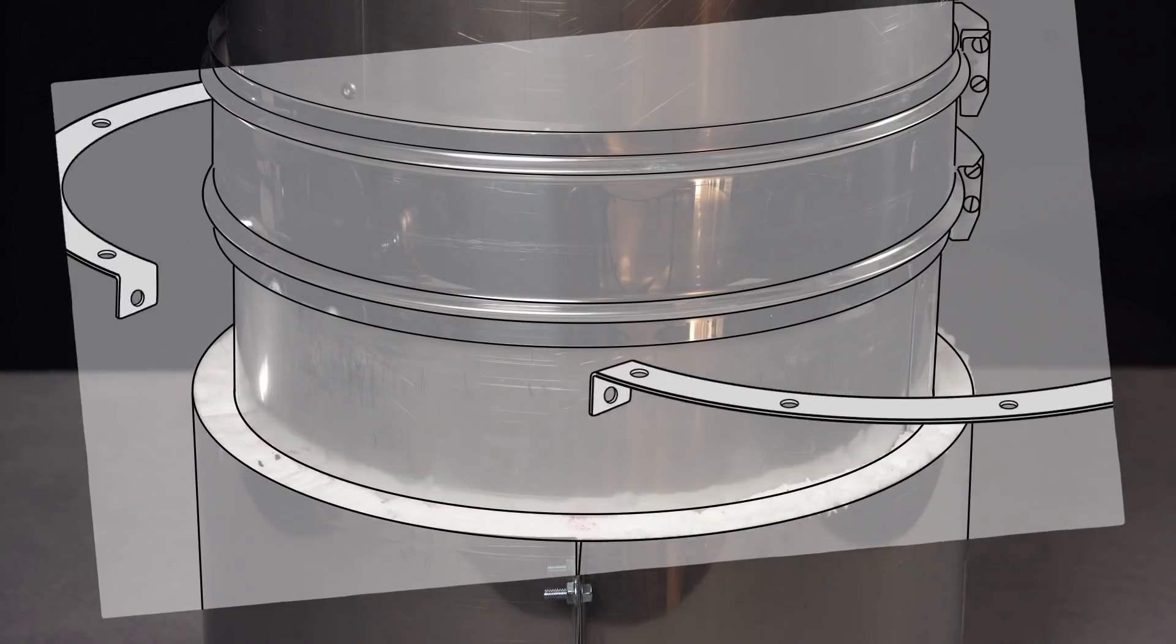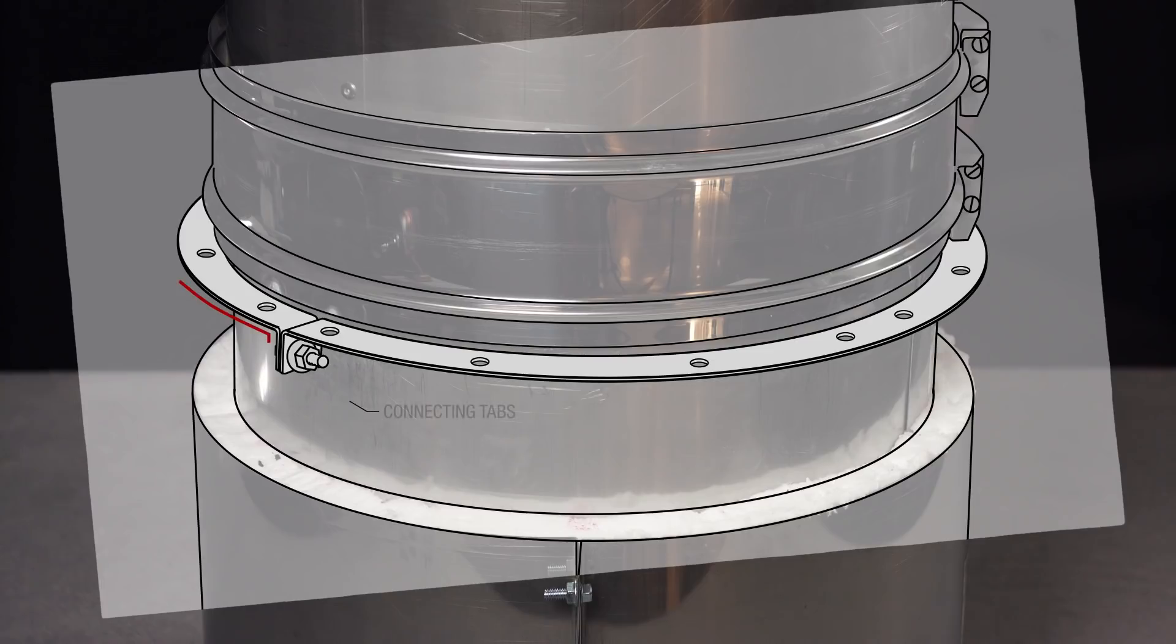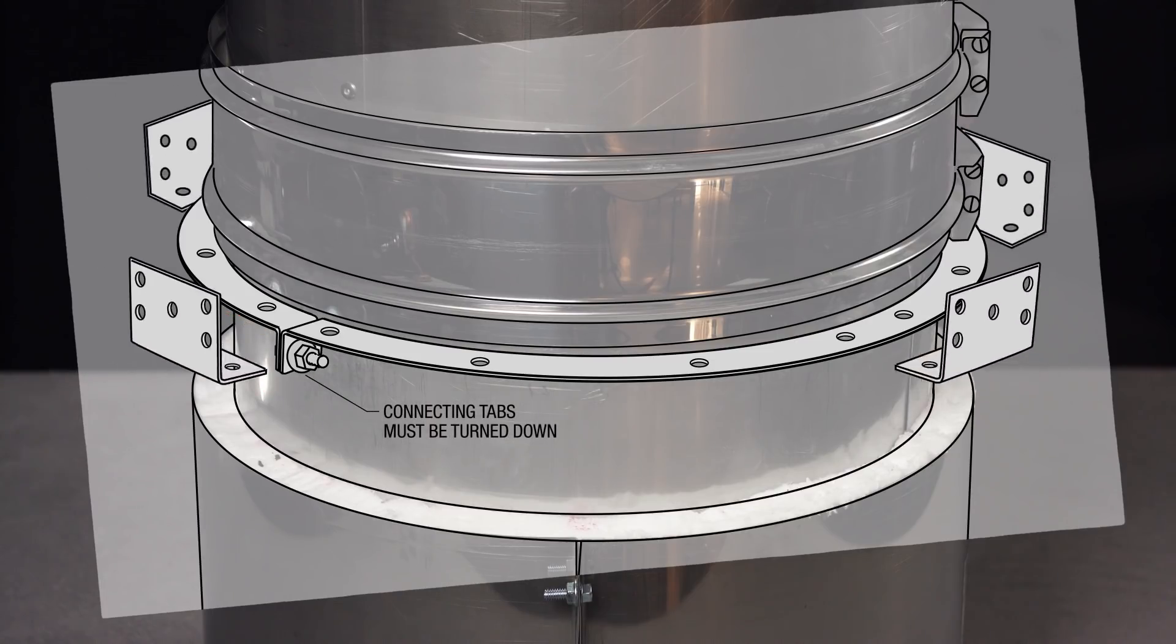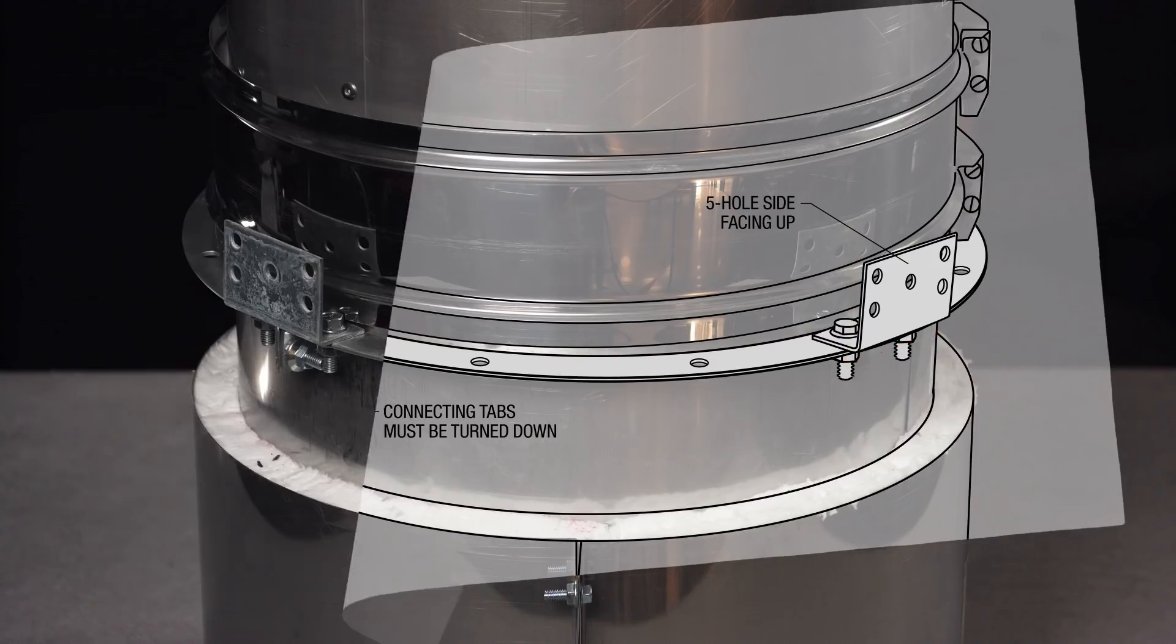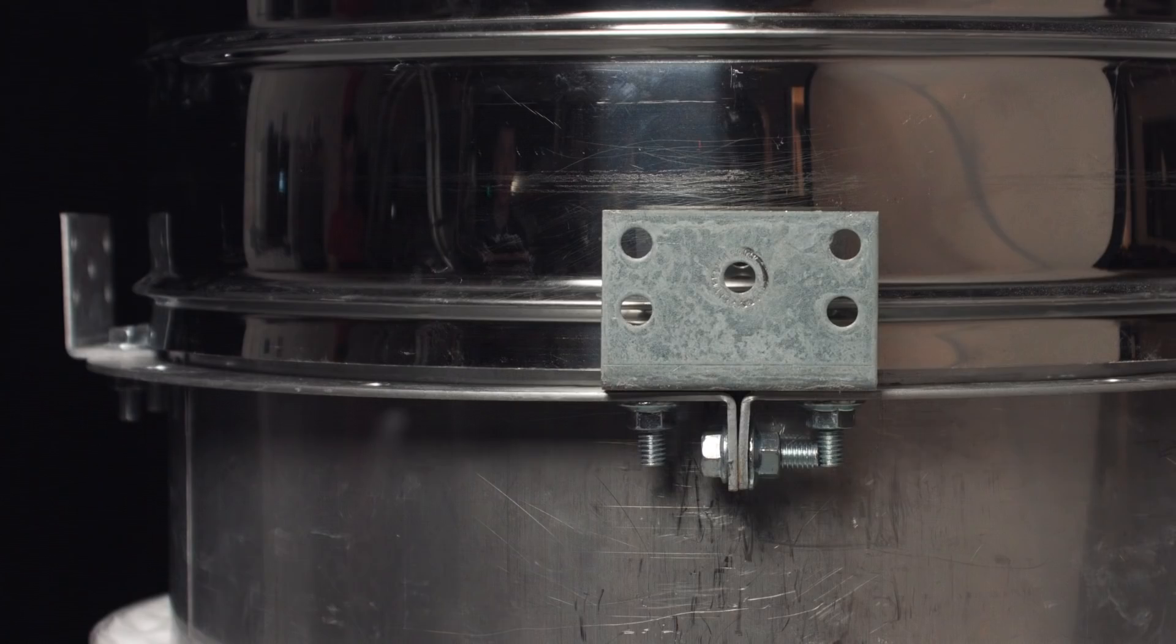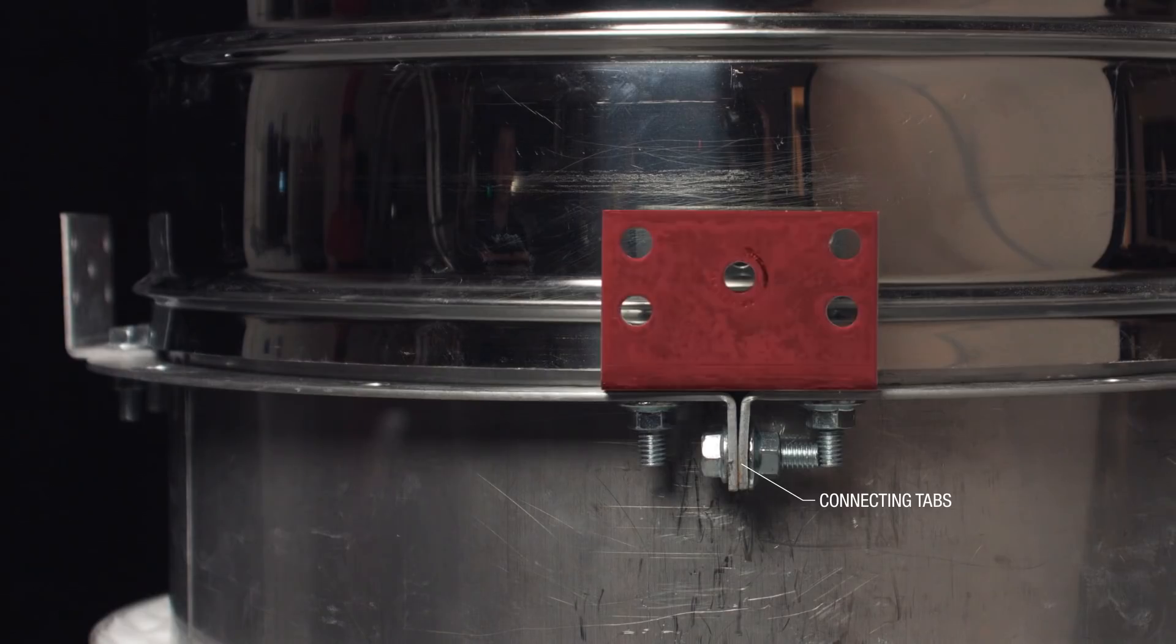Next, install the vertical support ring with the connecting tab turned down. Attach four leg mounting brackets with the five hole side turned up as shown, evenly spaced around the vertical support ring with two attached directly above the connecting tabs.